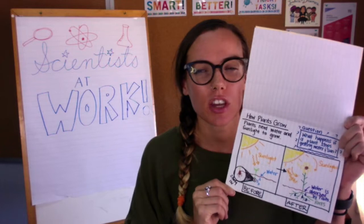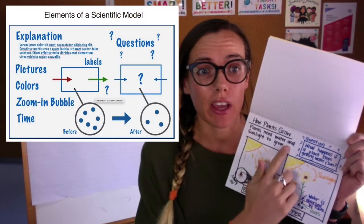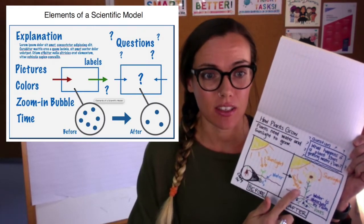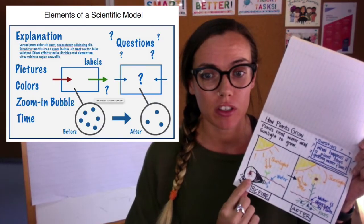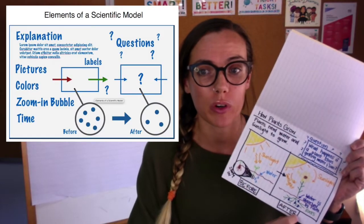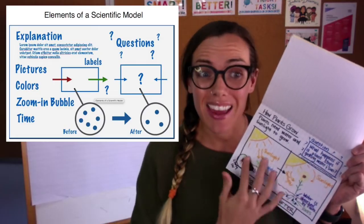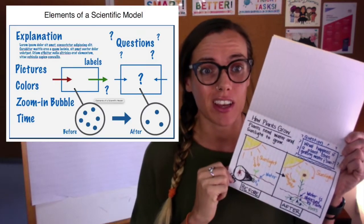And let's check back on those elements of a scientific model that we're supposed to include. Do I have my explanation? Yes. Do I have pictures? Yes. Colors? Yes, I did use colors. I have a zoom-in bubble to show what's happening in that tiny seed. I used time to show what happens before and what happens after. And I've also added a question. And I made sure everything was labeled and had arrows so that it was very clear.